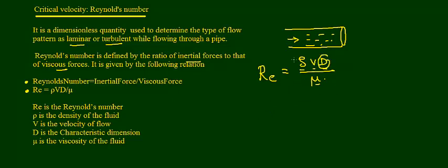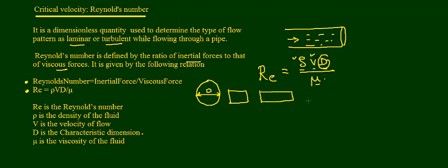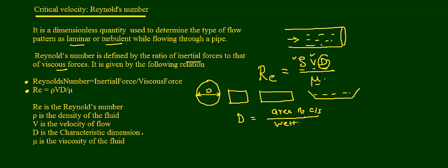Let's focus on characteristic dimension D. We already know what density, velocity, and viscosity are — but what do we mean by characteristic dimension? If the pipe has a circular cross-section, then its characteristic dimension is the diameter D. But we will not always have a circular cross-section; sometimes we may have a square or rectangular cross-section, or a channel. Therefore D stands for characteristic dimension, given by area of cross-section divided by the wetted perimeter.